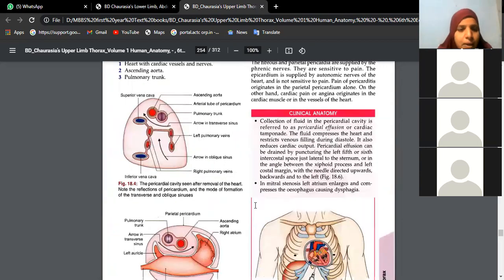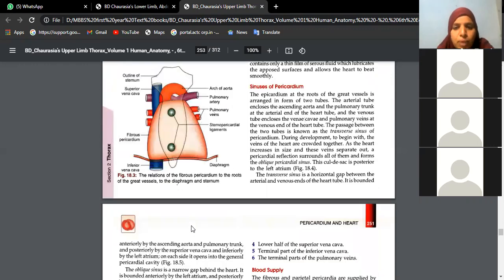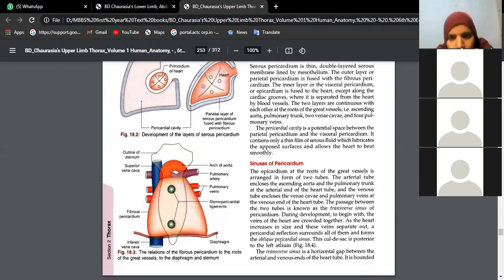See, this one is transverse sinus and this is oblique sinus. So transverse sinus, what are these two structures you are finding? The pulmonary trunk and the ascending aorta. Lower down you are finding this N-shaped, these veins: superior vena cava, inferior vena cava, and four sets of pulmonary veins.